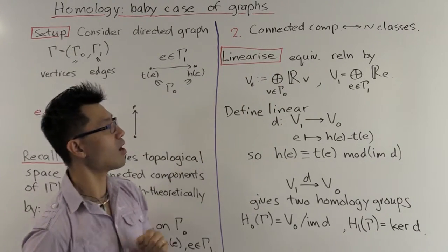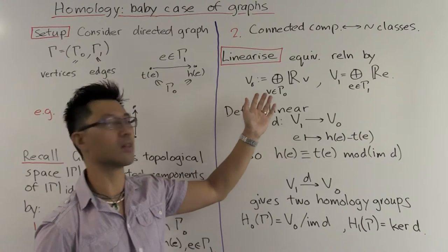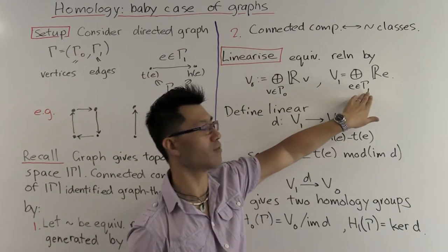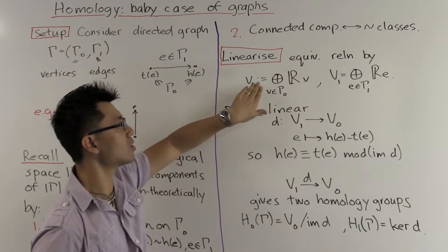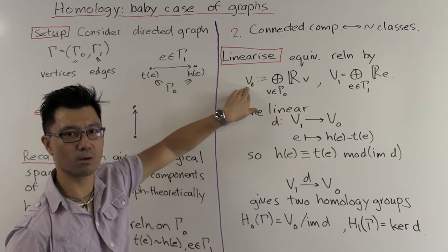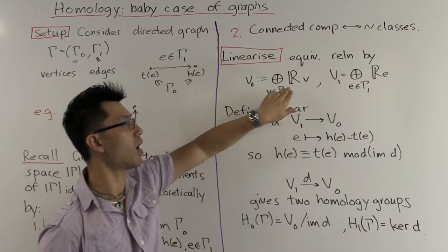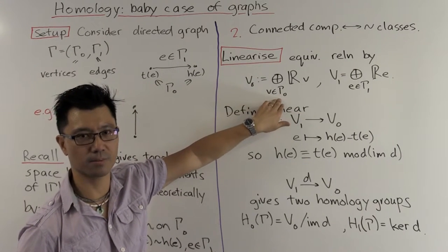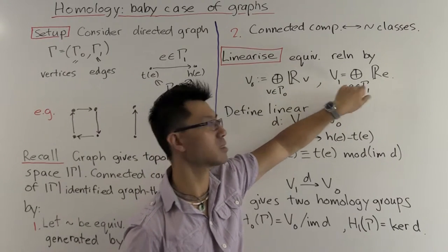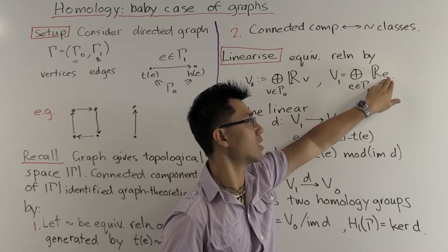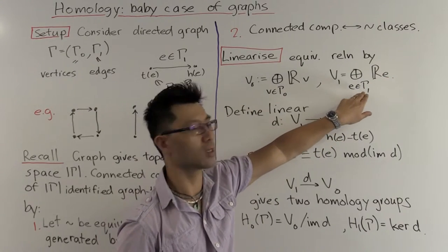So let's see how we can linearize this equivalence relation. So firstly, we have to linearize, so to speak, the set of vertices and the set of edges. And that's quite easily done. We consider the vector space V0, with basis given by the set of vertices. And we consider the vector space V1, with basis the set E of edges in gamma 1.